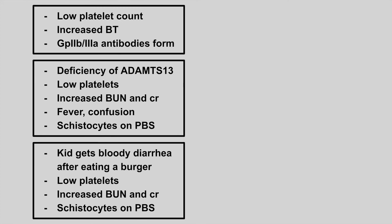Next, we have a patient with a low platelet count, increased bleeding time, and GP2b/3a antibodies. This is ITP.